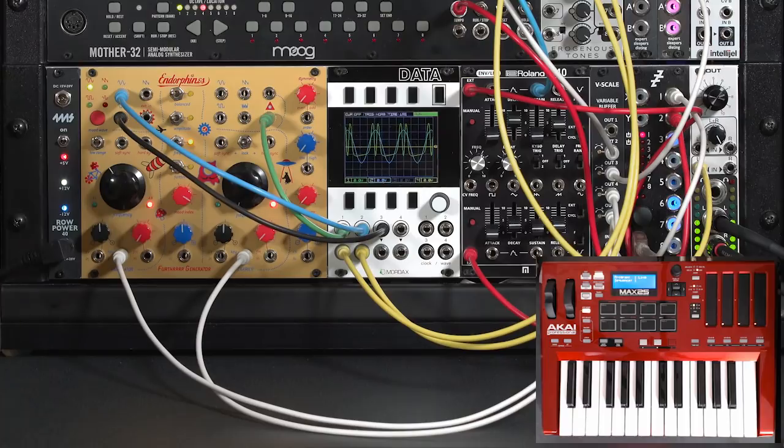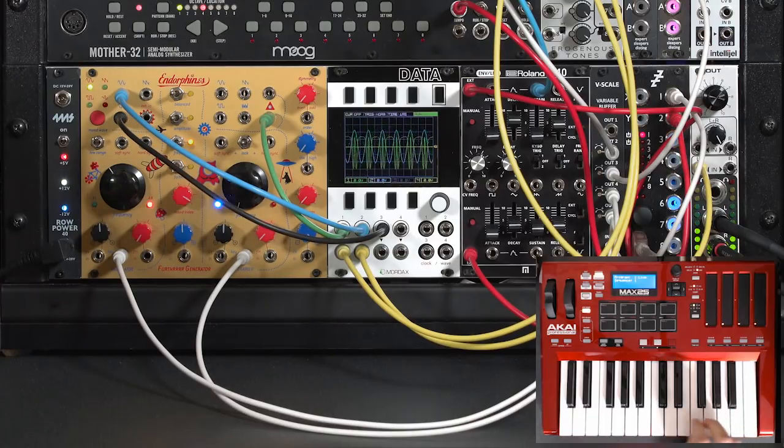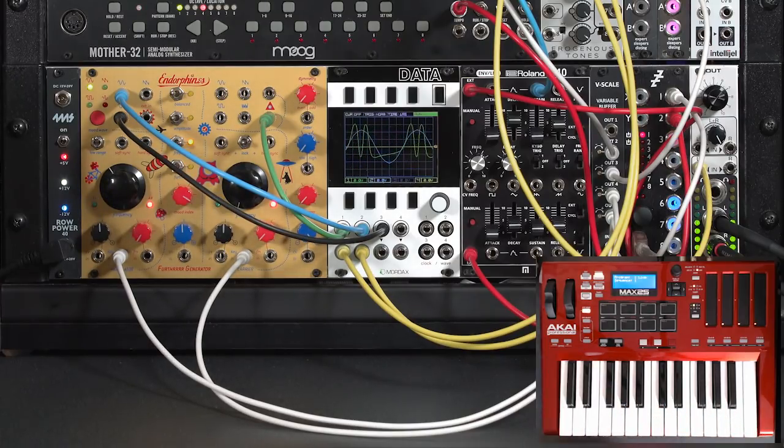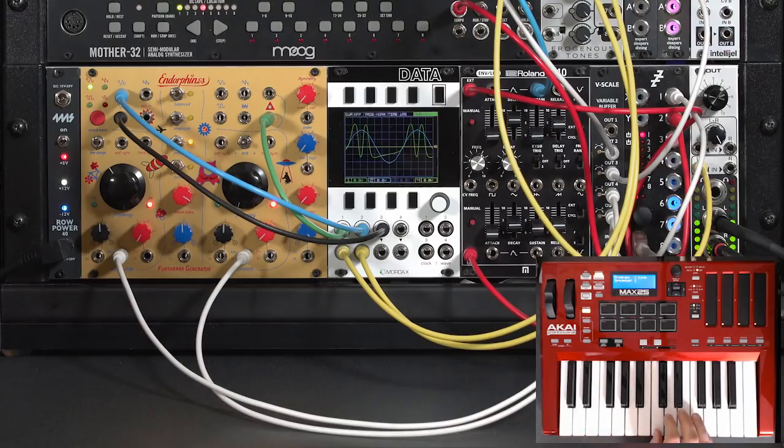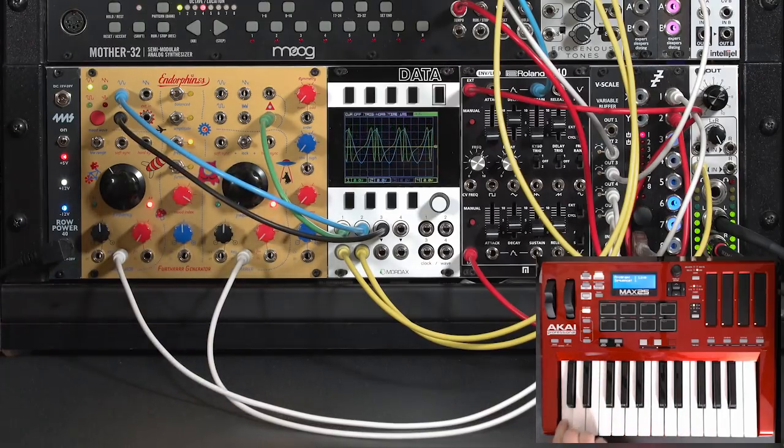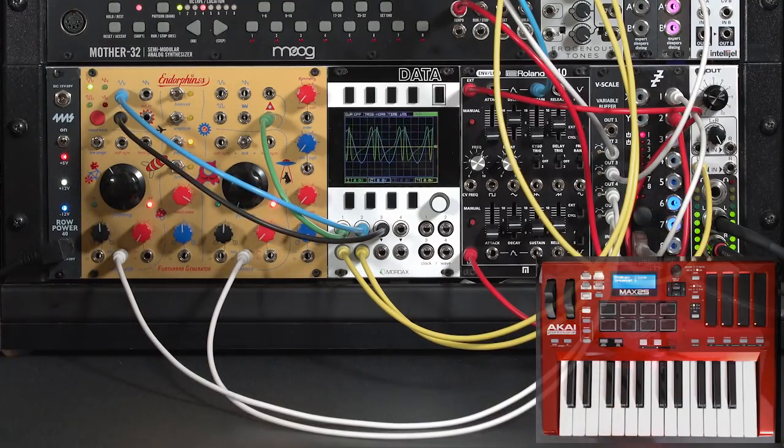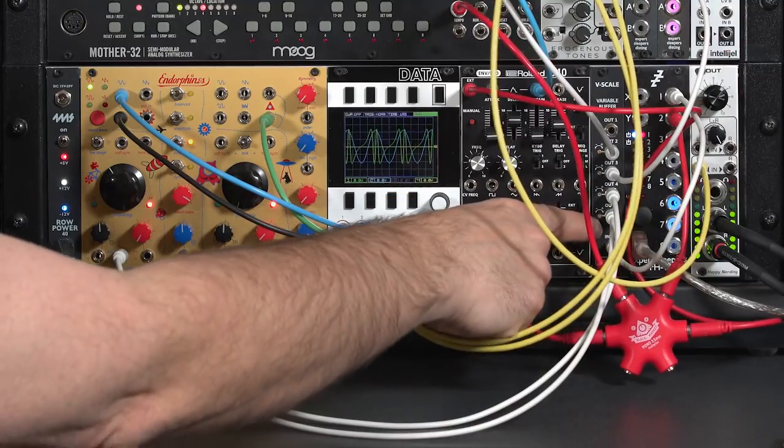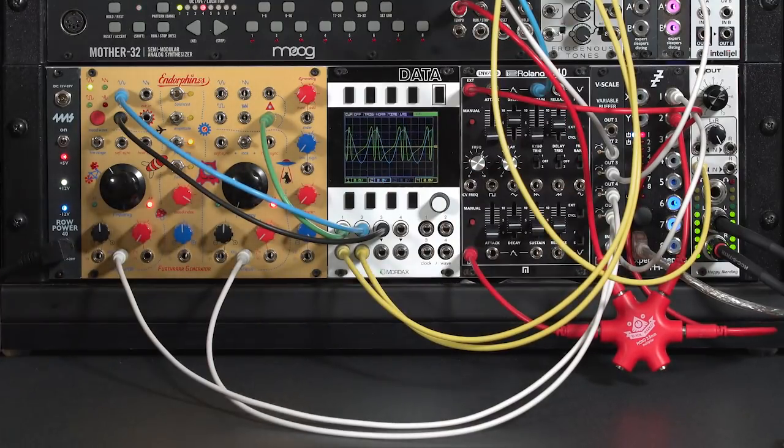Once you have tuned your oscillators using exponential FM, you can usually transpose across a nice range of pitches. If I'm having trouble, I can go ahead and trim either the oscillator itself or my V scale.